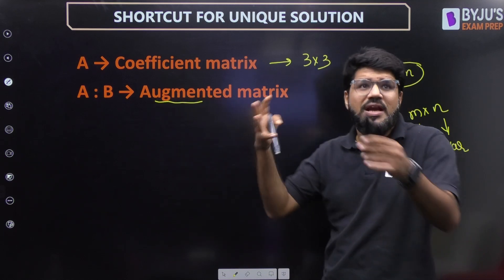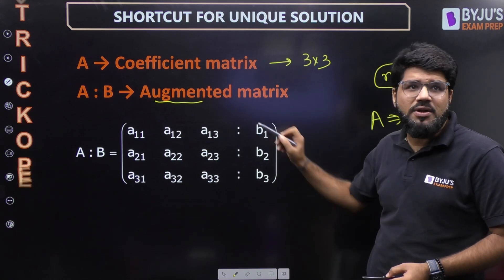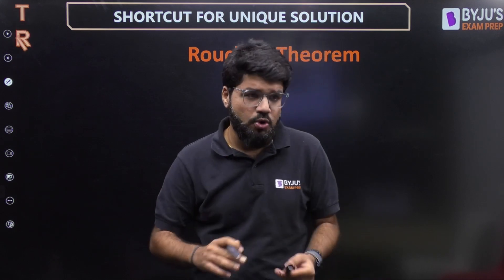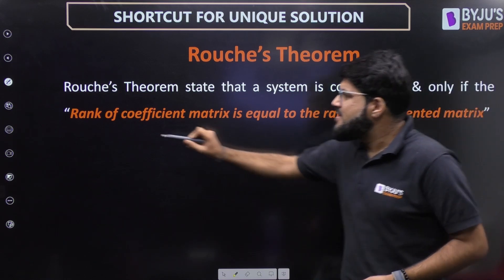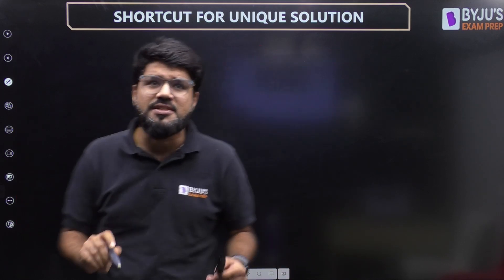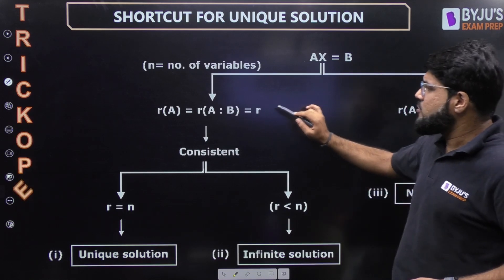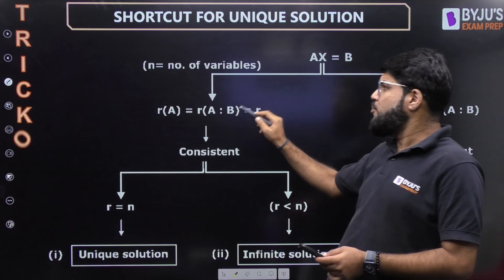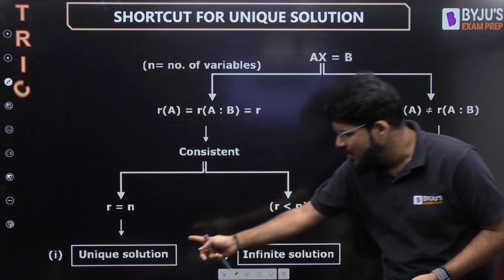Now we form an augmented matrix by combining A and B, written as [A|b], where b is the right-hand side constant column. Let me revise the full rule — the Rouché theorem — which states that whenever the rank of the coefficient matrix equals the rank of the augmented matrix, the system is consistent, meaning it gives some solution, maybe one or many.